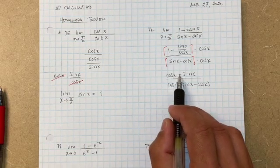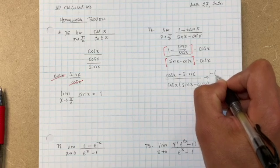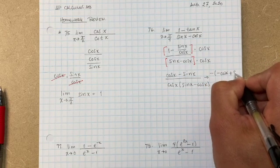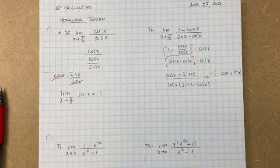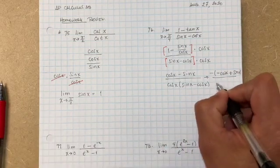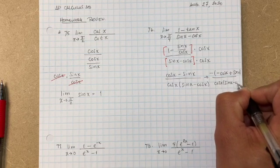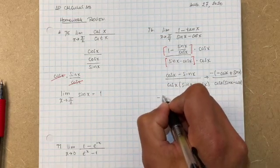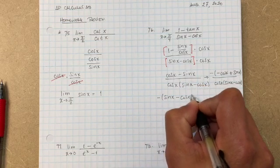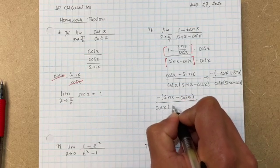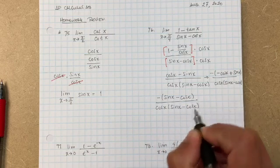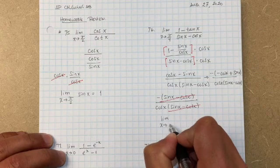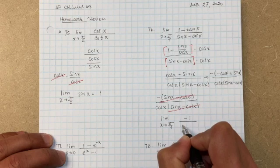So what can we do? On the top I'm going to factor out a negative. If I factor out a negative I end up with negative cosine of x plus sine of x. On the bottom we still have cosine of x times (sine of x minus cosine of x). Let's clean it up — I'll switch them around so we have a negative times (sine of x minus cosine of x) on top. Now you can see that the (sine of x minus cosine of x) terms simplify out. So now we have the limit as x approaches pi over 4 of negative one over cosine of x.